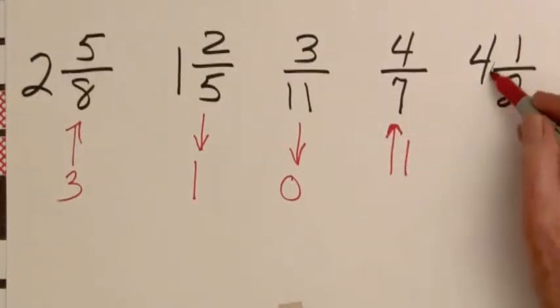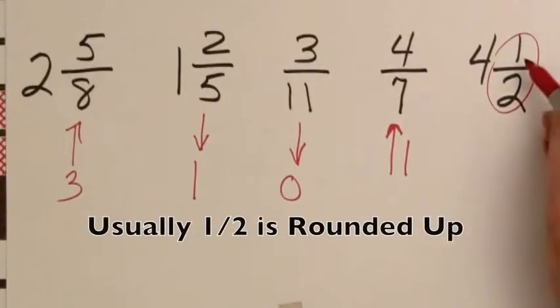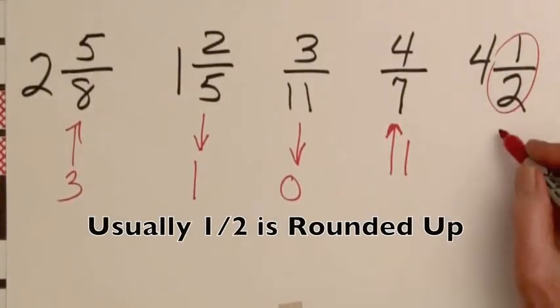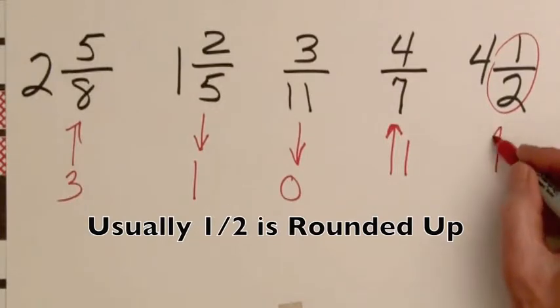Now when you have 1 half it's customary to round that up, so 4 and 1 half is going to round up to 5.